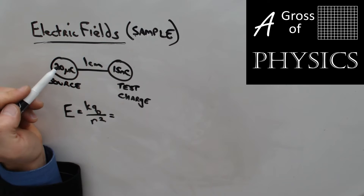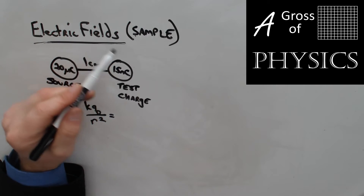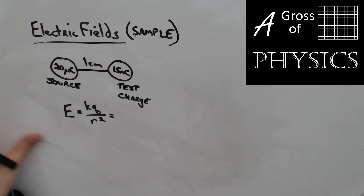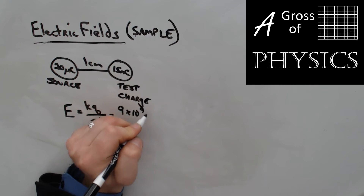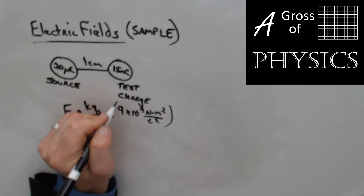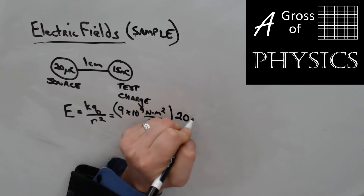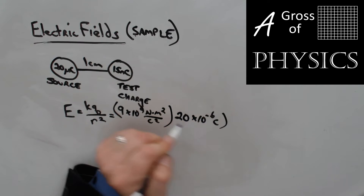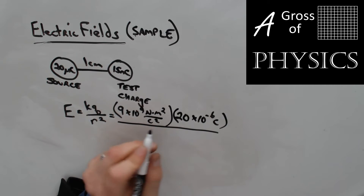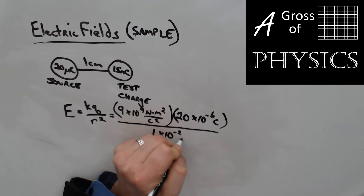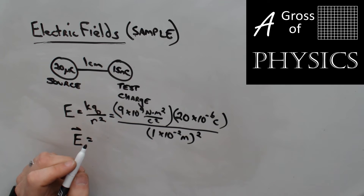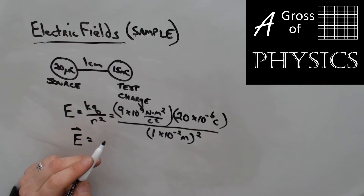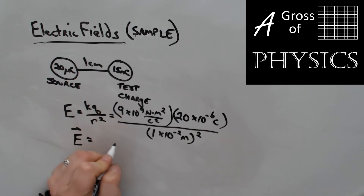The source is going to produce an electric field emanating outward in concentric circles, and the electric field at the test charge location will be affected by that. So K is 9×10⁹ N·m²/C², Q is 20×10⁻⁶ coulombs (the source), and R is 1 centimeter = 1×10⁻² meters squared. Calculating: 9×10⁹ times 20×10⁻⁶ divided by (1×10⁻²)², giving a very large number.